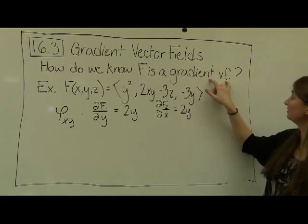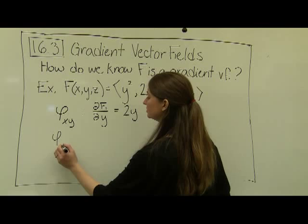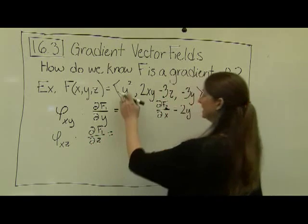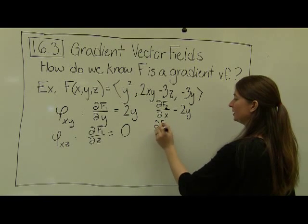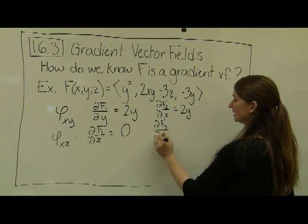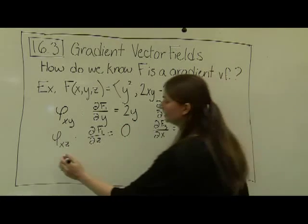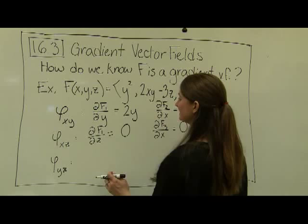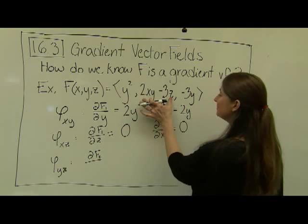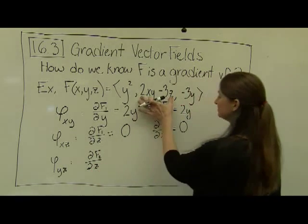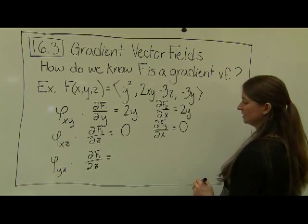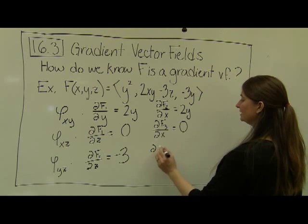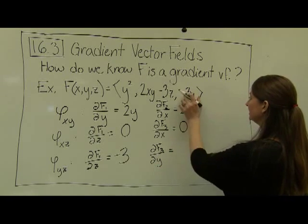We haven't verified everything yet. Next, check phi_xz: the partial of f1 with respect to z is 0 (no z's in that term), and the partial of f3 with respect to x is also 0. That matches. Finally, check phi_yz: the partial of f2 with respect to z is −3, and the partial of f3 with respect to y is also −3.